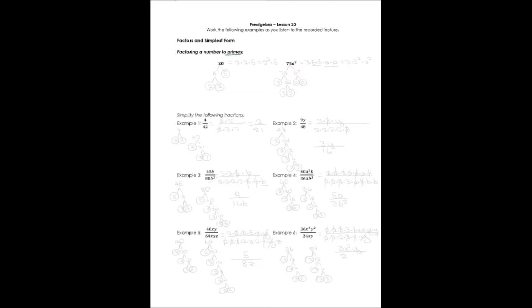In Lesson 20, we want to talk about factoring and prime numbers. A prime number — when we factor numbers to prime, we're factoring down to numbers that can only be divided by themselves and 1. For example, 2 is a prime number because we can only divide it by 2 and 1. 3 is a prime number. 4, however, is not, because it can be divided by 1, 2, or 4 — it has more factors. So we want to get down to primes.